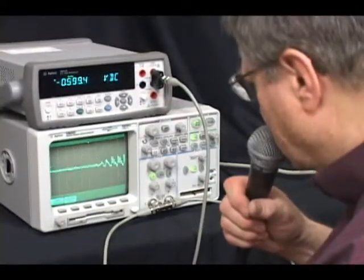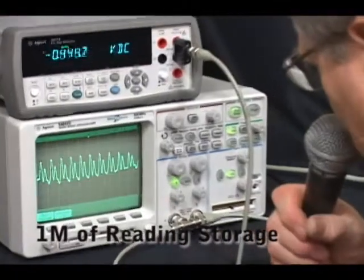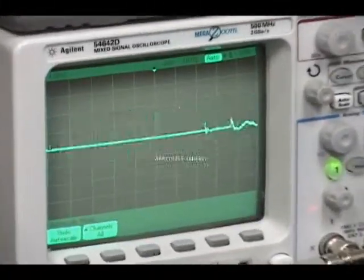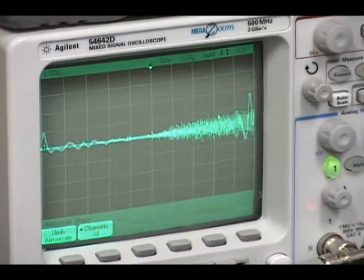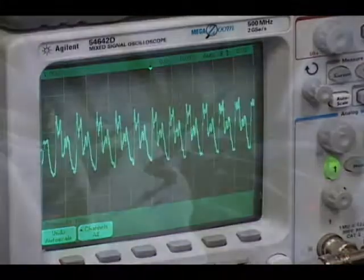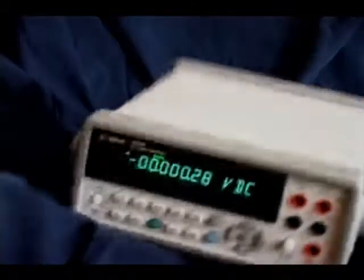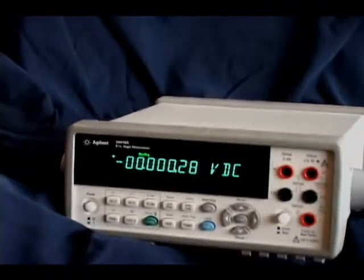The 34411A also features level triggering, one megabyte of internal reading storage, and pre-post-triggering capabilities, making it useful for digitizing, as shown here, capturing speech. Or use the 34411A to digitize the output of an accelerometer during a drop test.